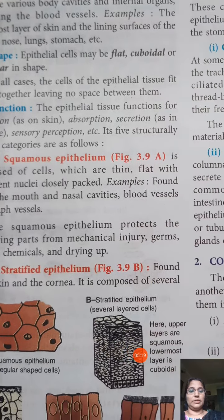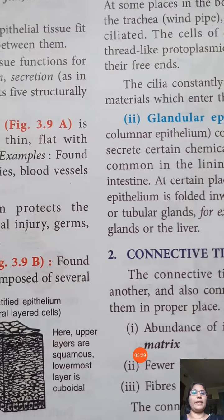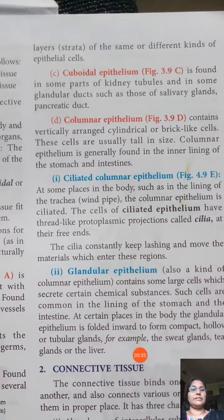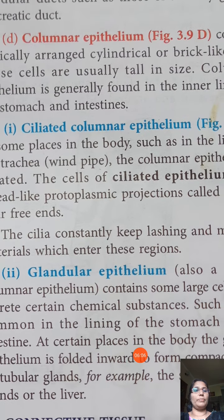Columnar epithelium has a column or pillar shape with a nucleus, and the cells are vertically arranged like bricks. They are found in the inner lining of the stomach and intestine, where they may also secrete substances.